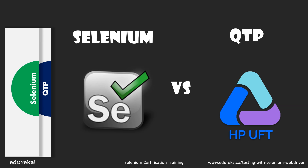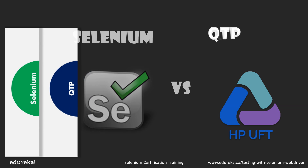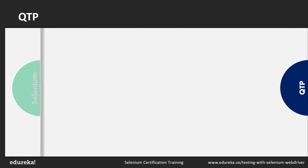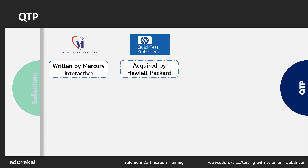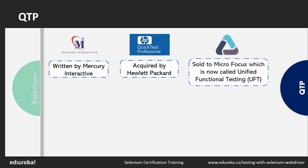QTP is an acronym for Quick Test Professional, which is now called Unified Functional Testing (UFT). QTP was originally created by Mercury Interactive. It was later acquired by Hewlett Packard (HP) in the year 2006. The software was then combined with HP Service Test into a single software package, available until 2016, when the entire division was sold to Micro Focus.